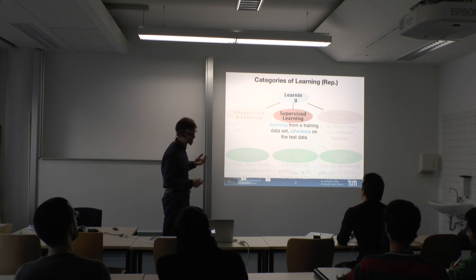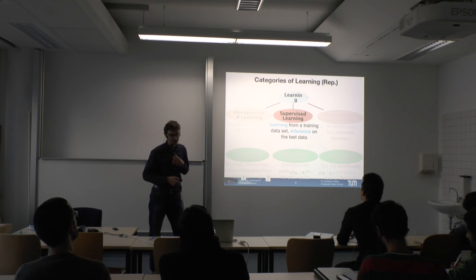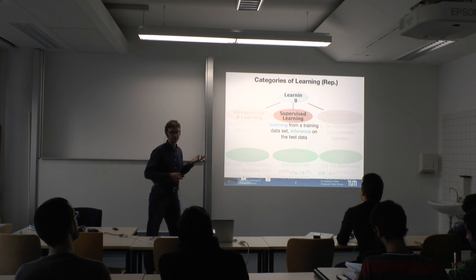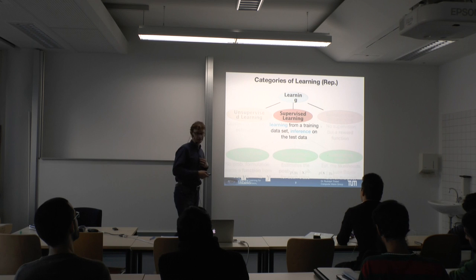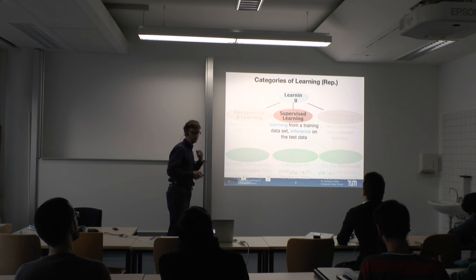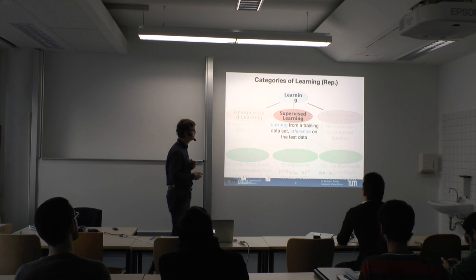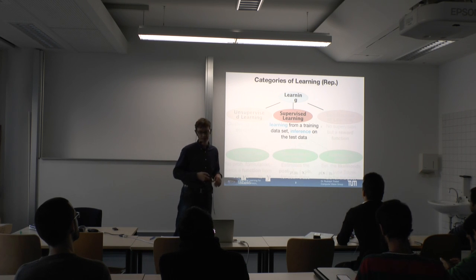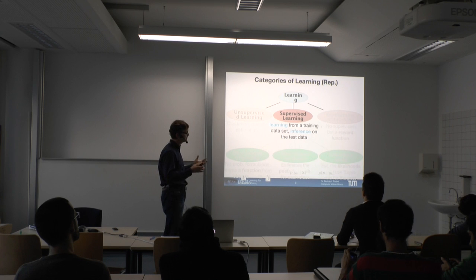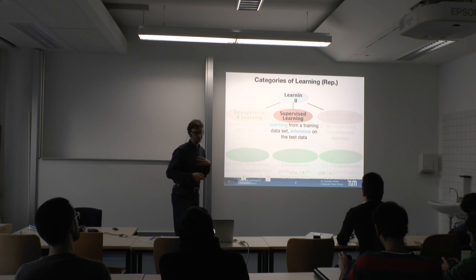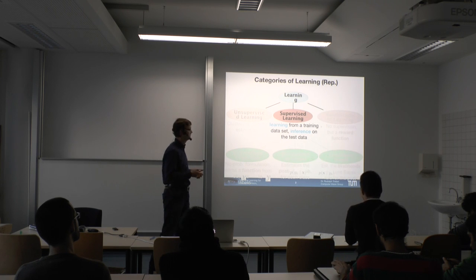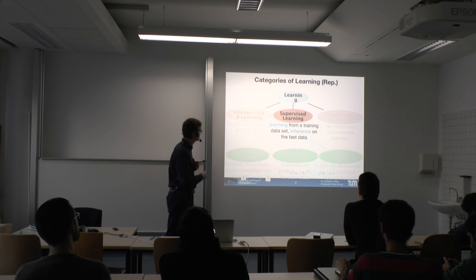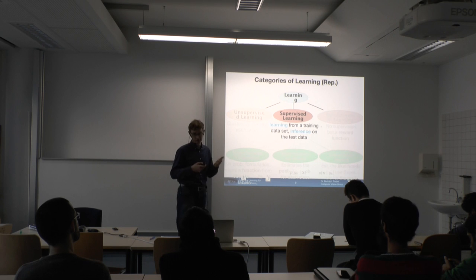We know that regression is a supervised learning problem. That means we have some labeled data — a training data set labeled by a human. In the first round, we do training on that data set. In the second round, we get new unobserved test data, and on that test data we do inference, also called prediction. You have a new test data set and you'd like to assign it some semantics, by first training a model on the training data set and then applying it to the test data.